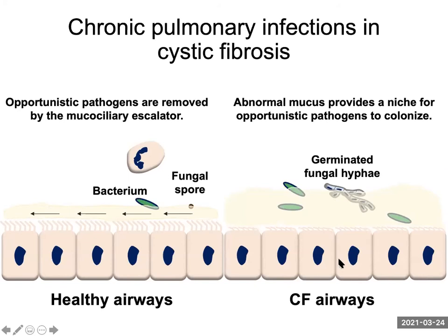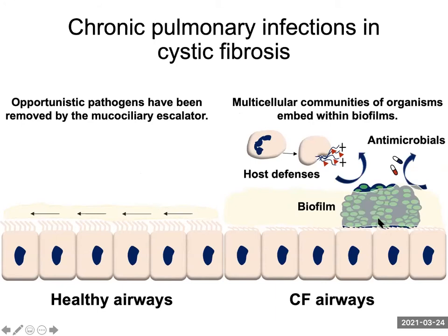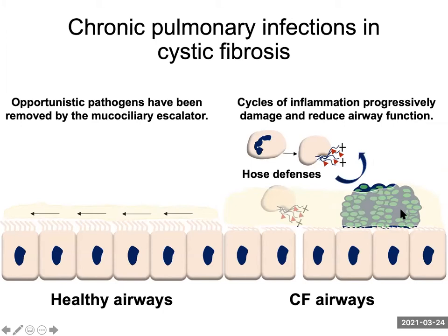In cystic fibrosis airways, the mucociliary elevator is impeded by increased production of an abnormal mucus. Consequently, organisms stuck in this static mucus can adapt to the airways by embedding themselves in self-produced extracellular matrices, also known as biofilms, to which some antimicrobials can be less effective. The persistence of these organisms in the airways induces vicious cycles of inflammatory responses that increase the influx of neutrophils and consequently their products. These neutrophil products damage the airways, leading to irreversible lung decline, which eventually leads to respiratory failure in these patients.